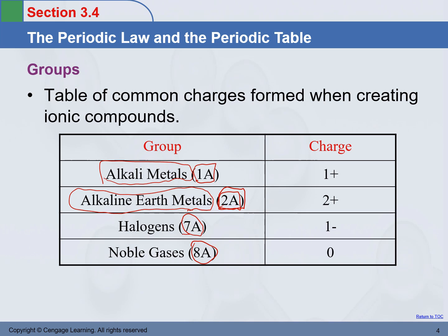What this slide is trying to show is that elements in the same column or same group have similar chemical properties. It uses the charge those elements carry when they form a compound. Elements in group 1A metals all carry a 1+ charge, 2A carries 2+, hydrogen carries a 1− charge, and noble gases will not carry any charge.